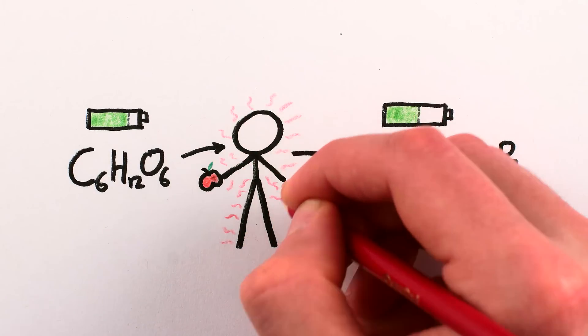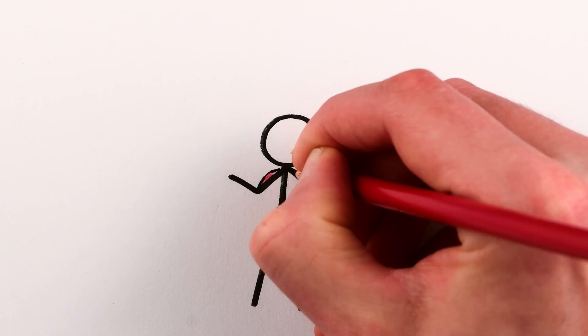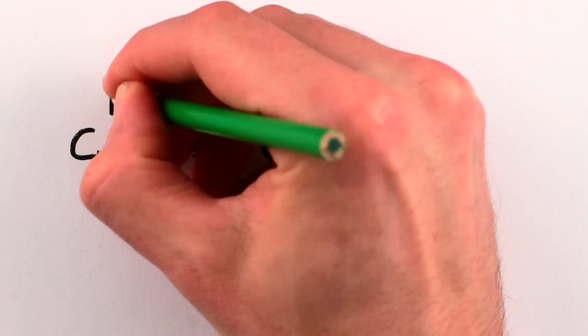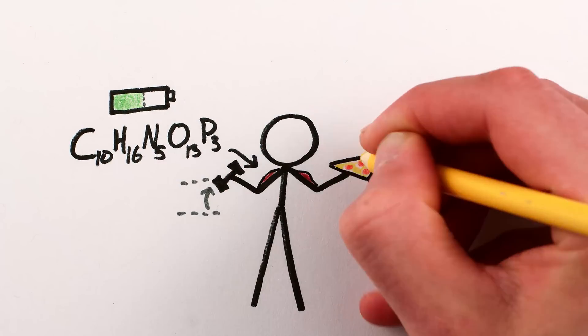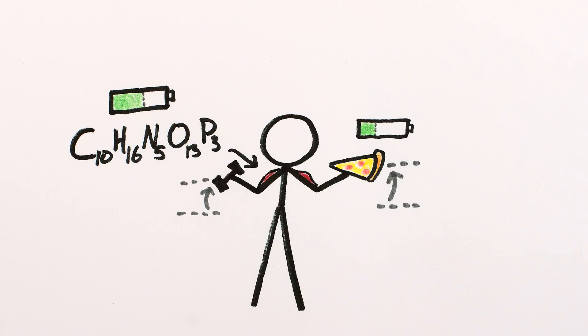Some of that useful energy got lost pushing around all the cell machinery that makes the ATP. The proteins in your muscles utilize the energy in ATP to contract so that you can lift a barbell or a slice of pizza. But not all of the useful energy of the ATP goes into lifting the pizza.